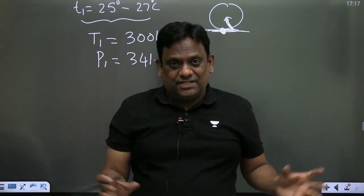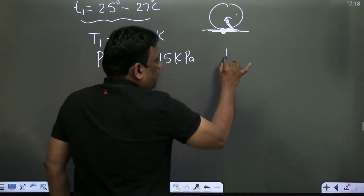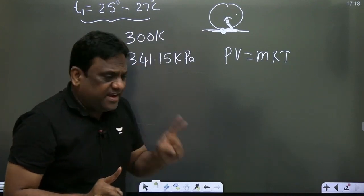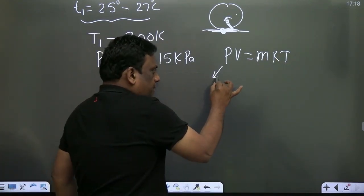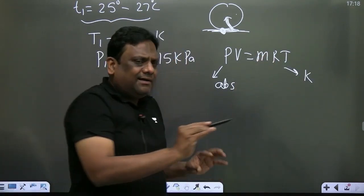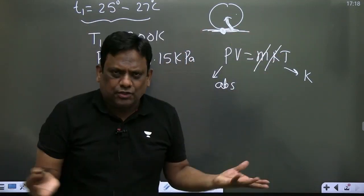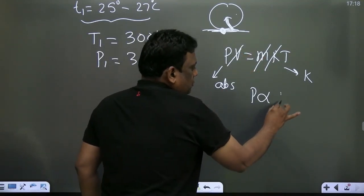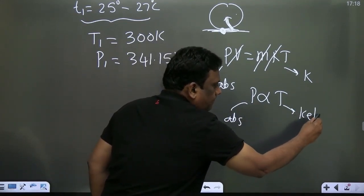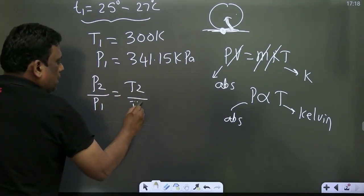You know the volume of the tire is constant. Air in the tire is an ideal gas we can treat it. So PV is equal to mRT. Mind you my dear students, whenever I write ideal gas equation, this pressure should be in absolute and temperature should be in Kelvin. Mass is constant, it's not leaking. R is a gas constant. Volume of the tire is not changing, this is also constant. So pressure is directly proportional to temperature. Can I write P2 by P1 is equal to T2 by T1? It is constant volume heating.